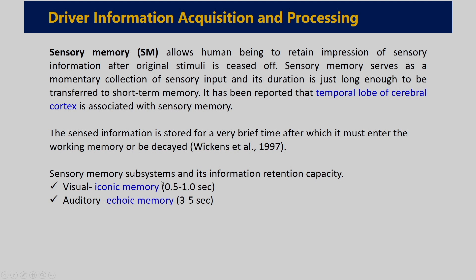Sensory memory subsystems and information retention capability vary based on the type of information. Visual information is stored as iconic memory with a duration of 0.5 to 1 second, after which it decays. Auditory information is stored as echoic memory with a duration of 3 to 5 seconds.